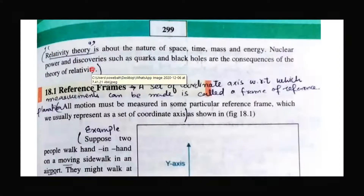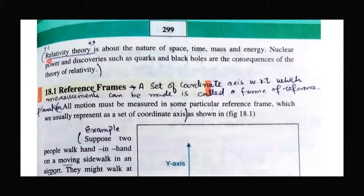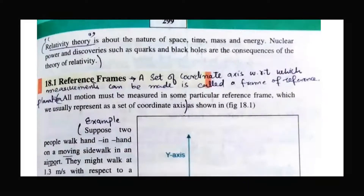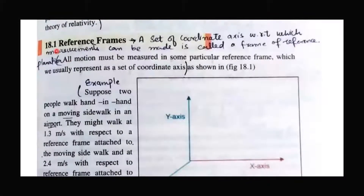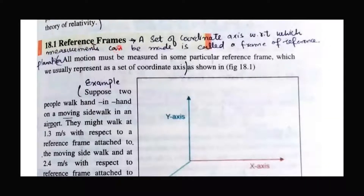What are the relevant concepts related to our theory of relativity? But to study the theory of relativity, you must first have a concept of the frame of reference. A frame of reference is basically a set of coordinate axes with respect to which measurements can be made. It is called a frame of reference.